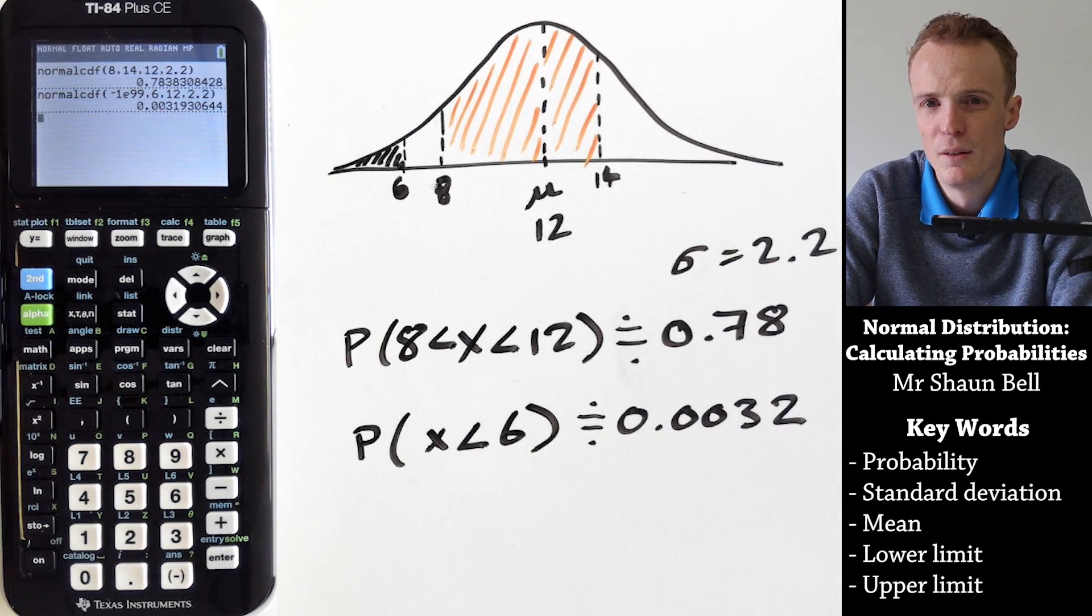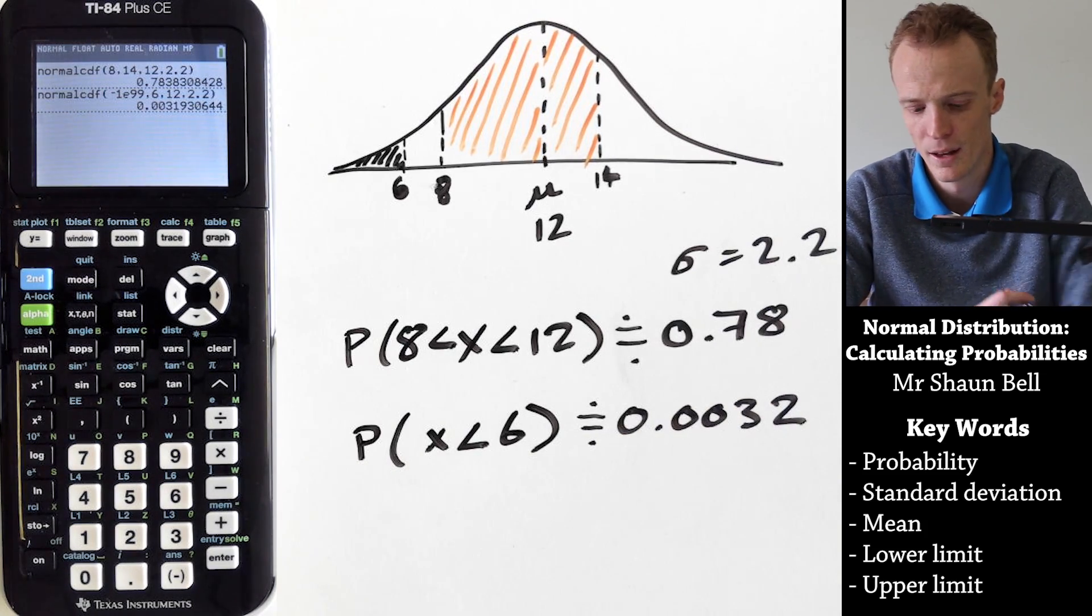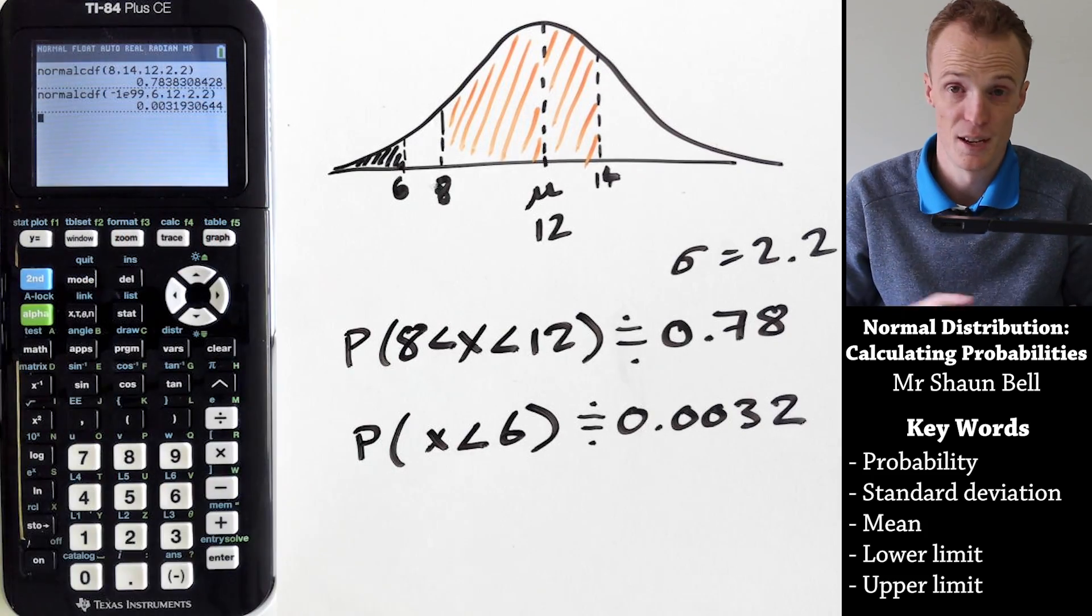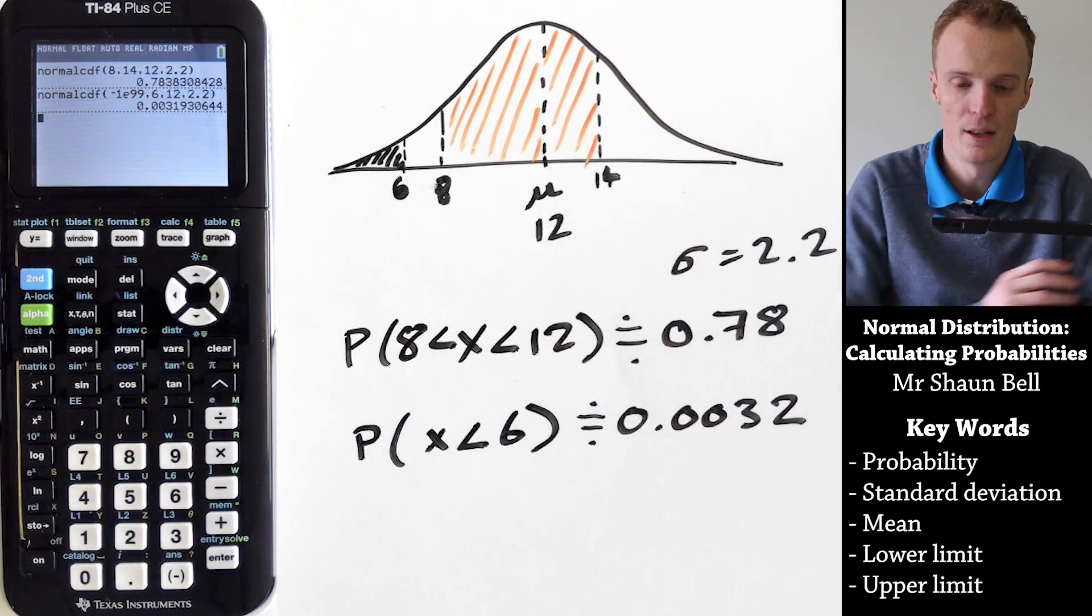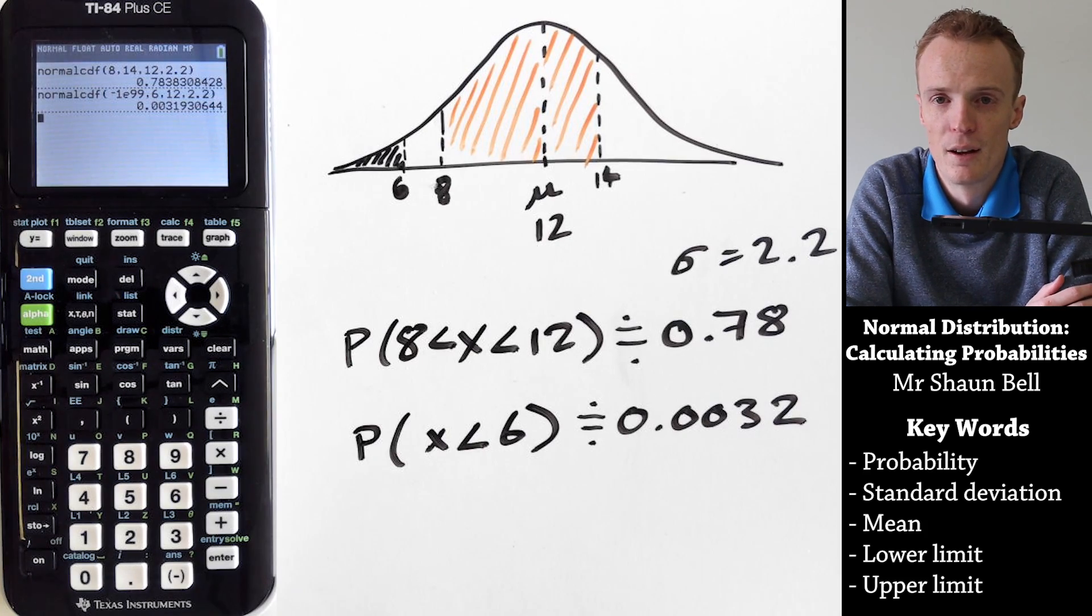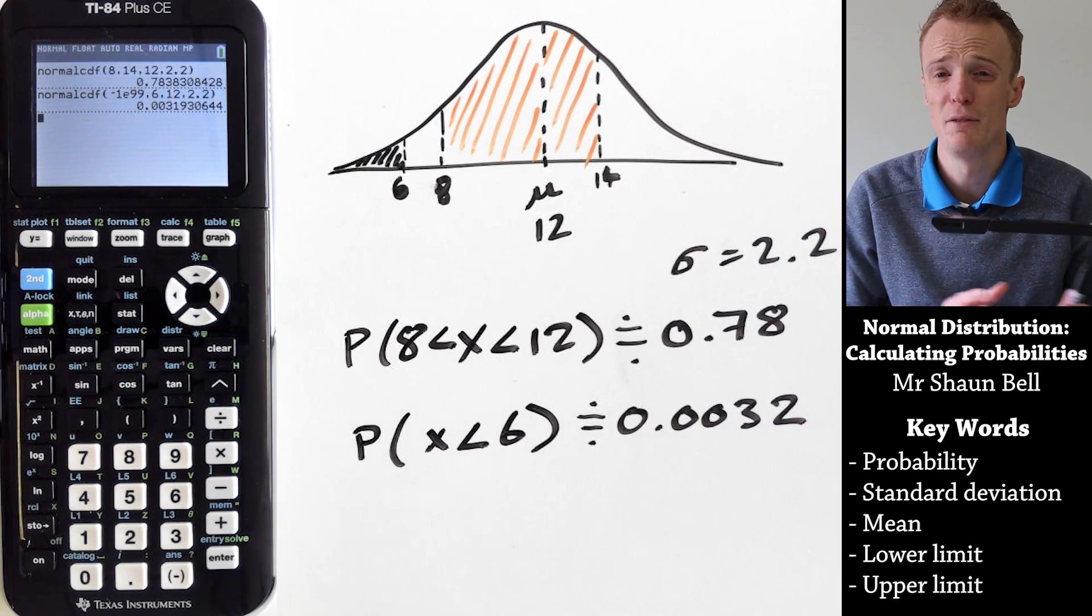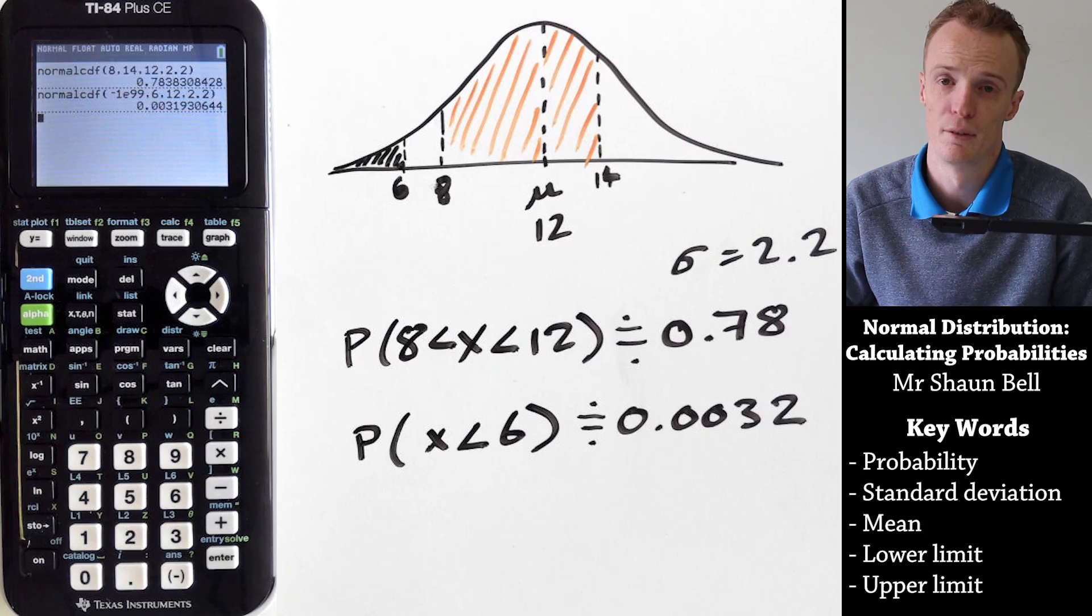So the key thing is if we're dealing with a probability that's got no lower limit, and the same thing for an upper limit, we need to put into our calculator a value that's really really small or a value that's really really large.